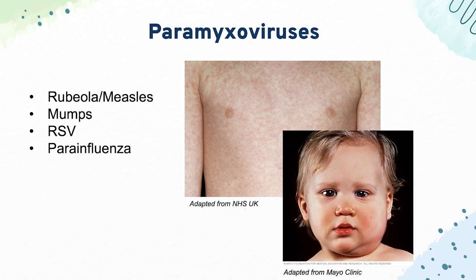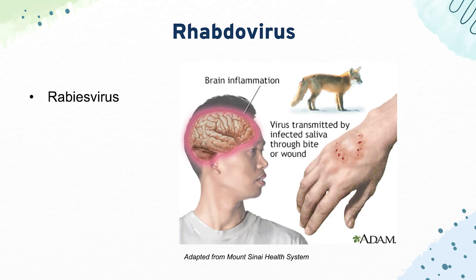Then we have rabies virus, which uses the nicotinic acetylcholine receptor to travel up to the brain, where it causes Negri bodies — visible on histology. It's usually from bat bites. They like to test if students know the most common source; it's not dogs, it's actually bats.